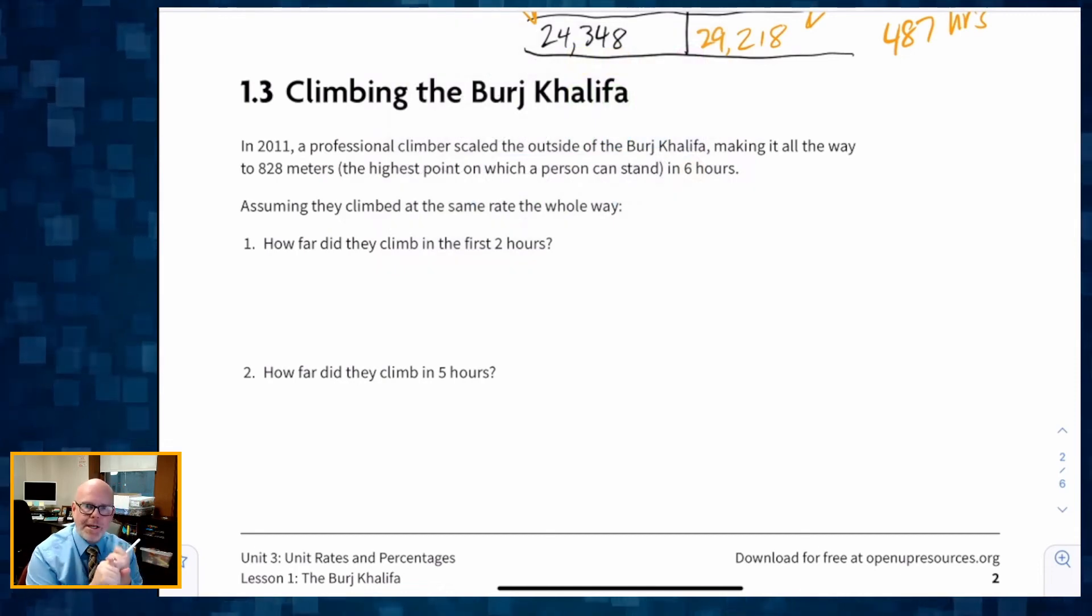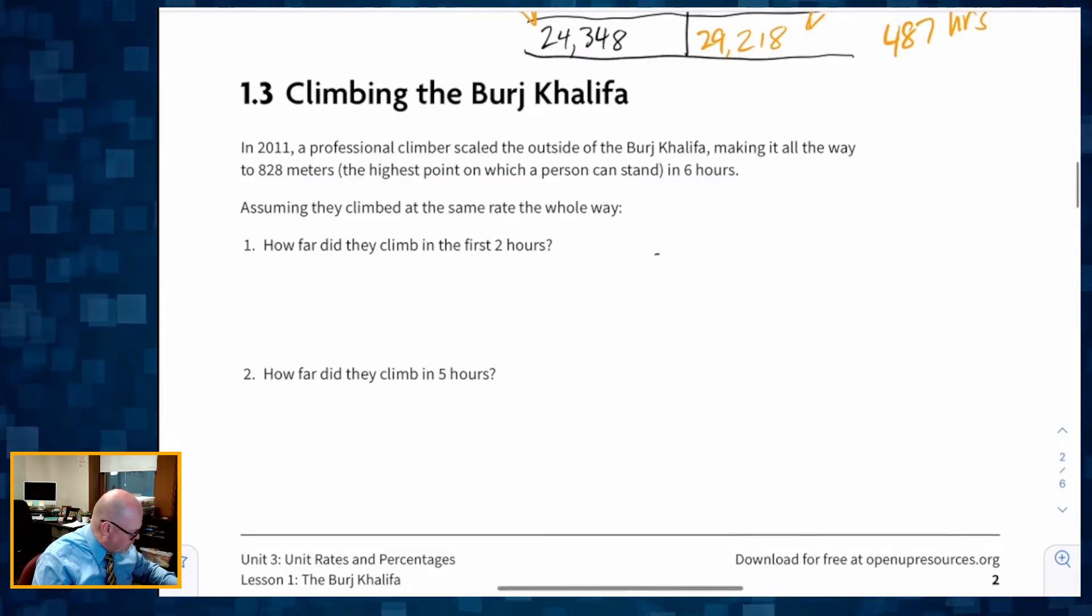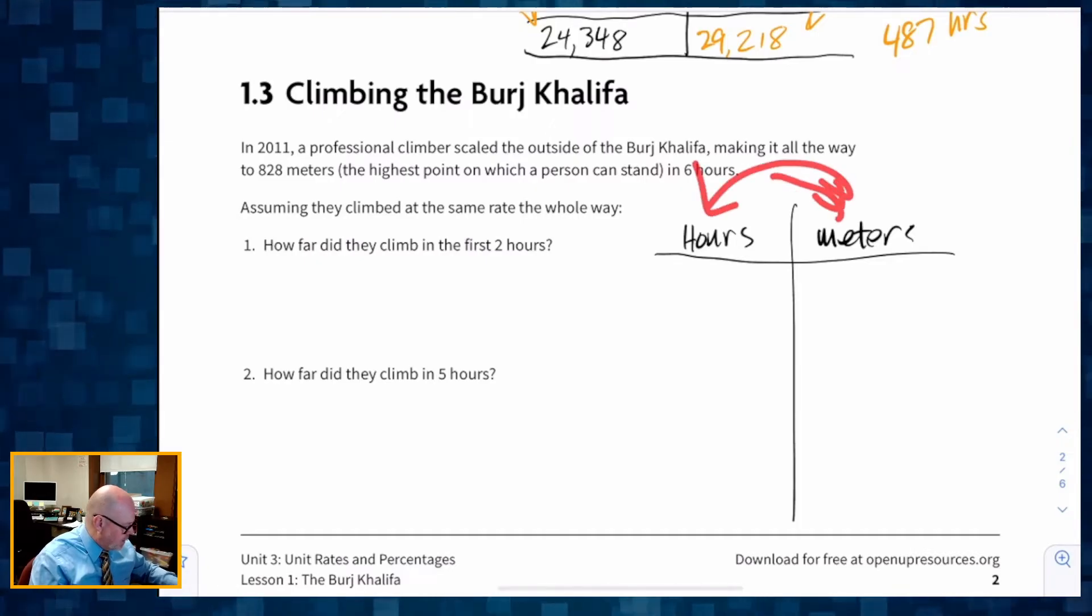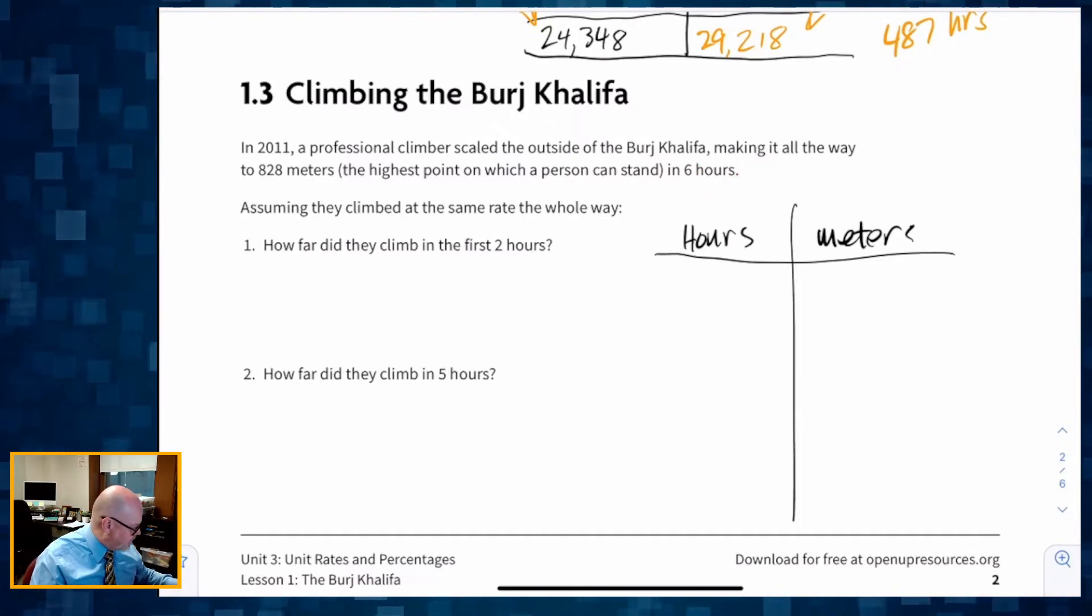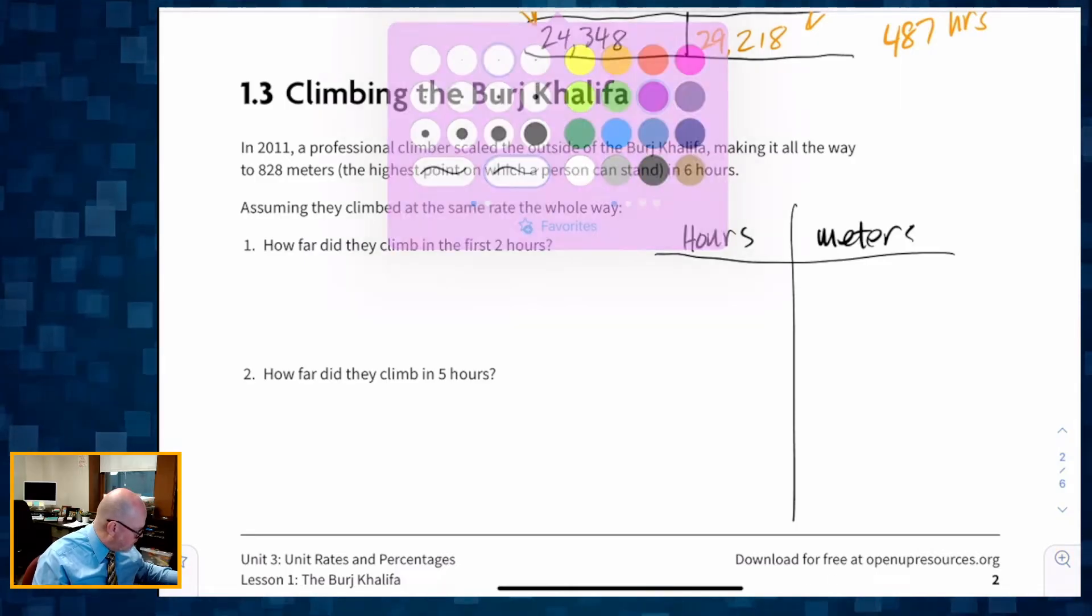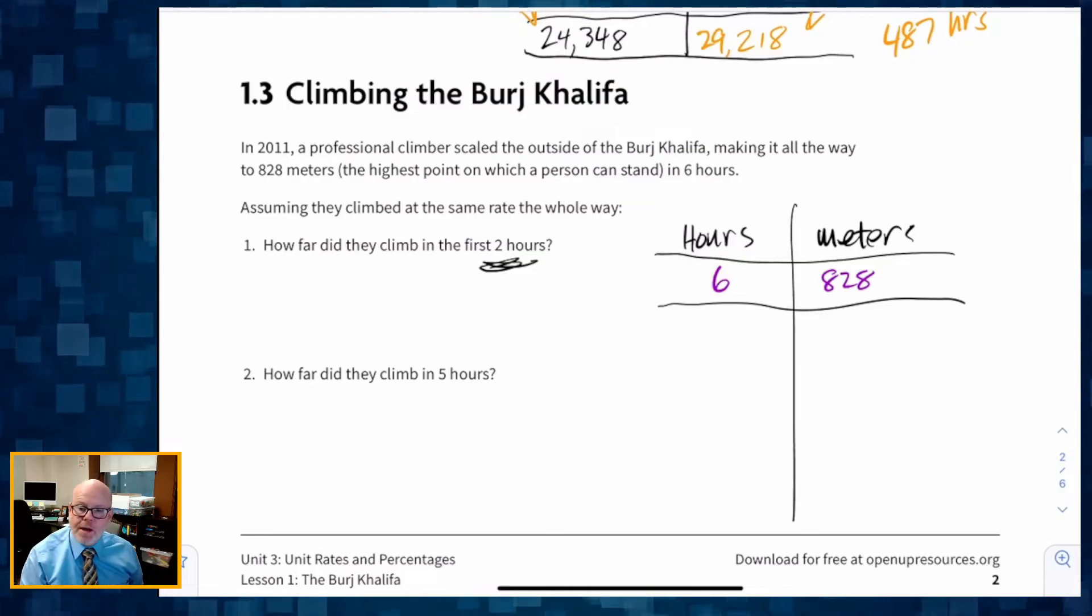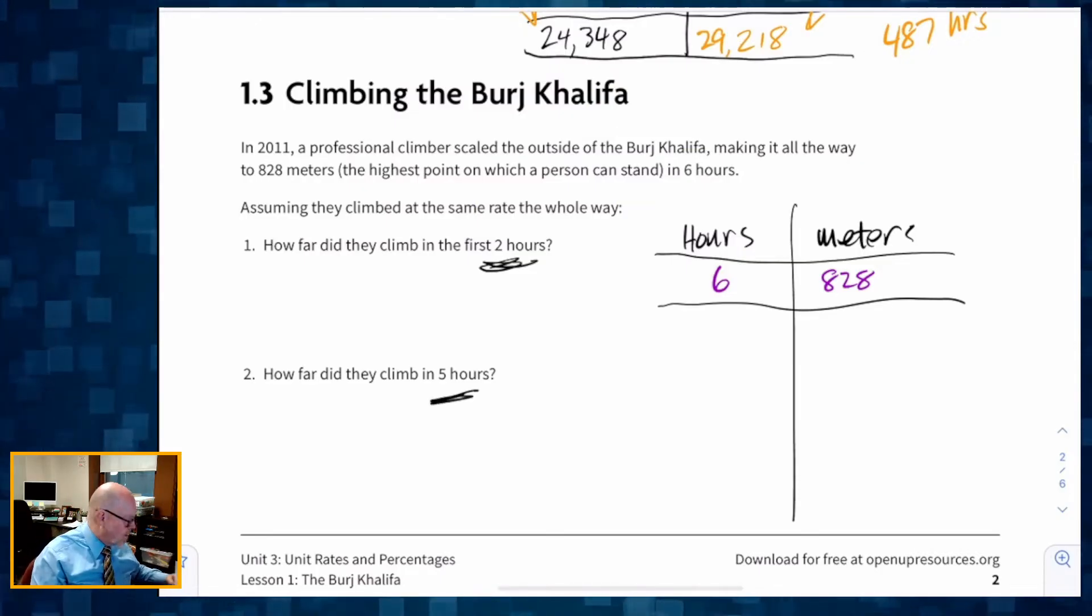We could use double number lines, we could use tape diagrams, but I am going to use a table right here. We've got hours and we've got meters. I could have swapped those if I wanted to, but hours and meters is perfectly fine the way I have it. And let's put in that initial ratio that they gave us. Six hours, 828 meters. And we want to figure out how far did they climb in two hours. We want to figure out how far did they climb in five hours.